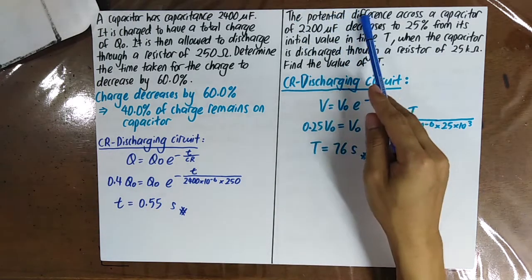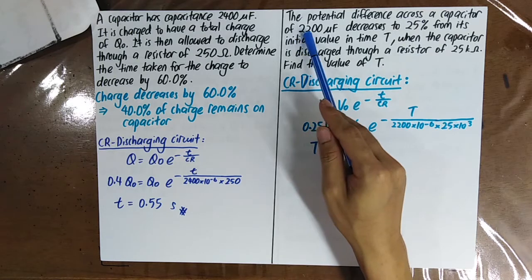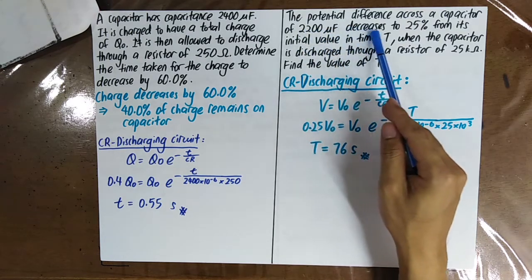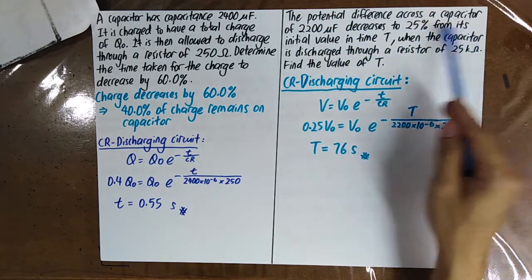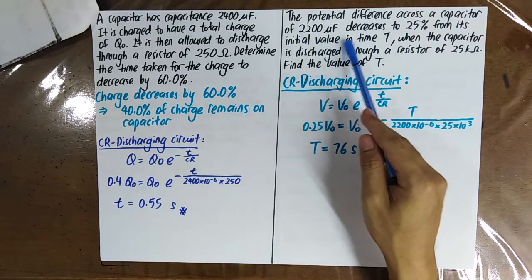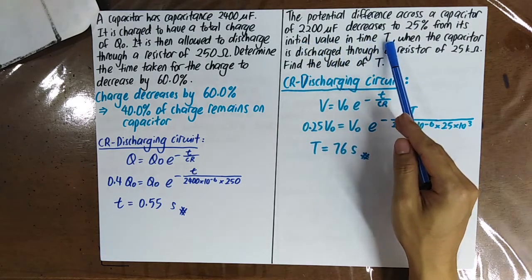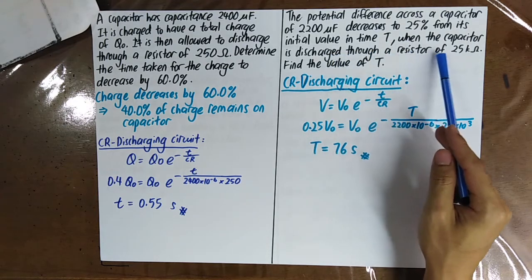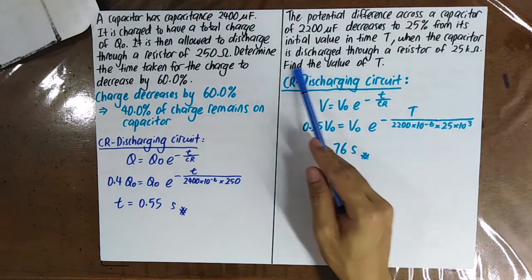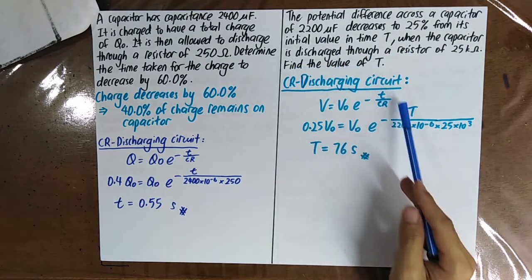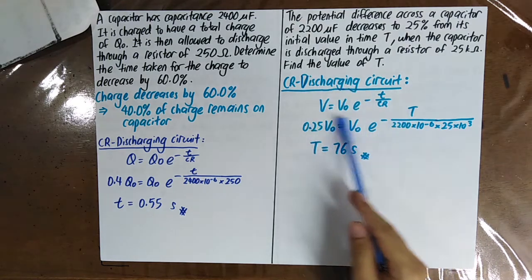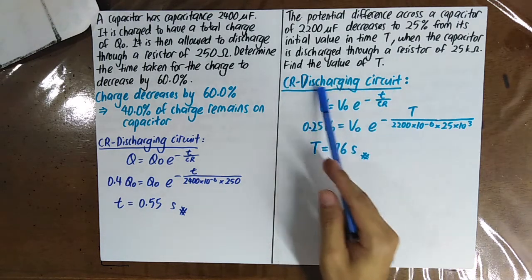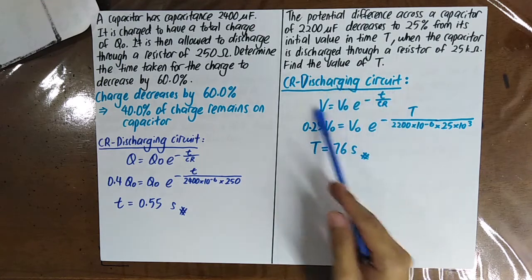The potential difference across a capacitor of 2200 microfarad decreases to 25% of its initial value in time T, when the capacitor is discharged through a resistor of 25 kilo ohm. Find the value of T. This uses the same formula derived for the CR discharging circuit.